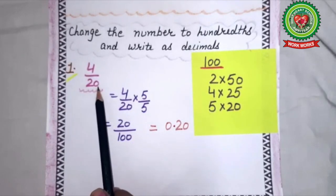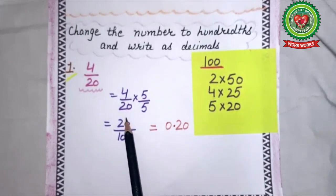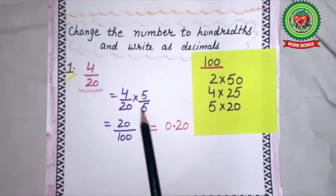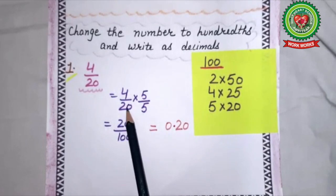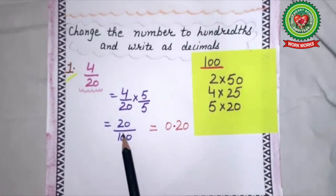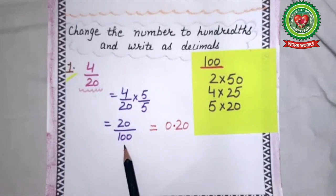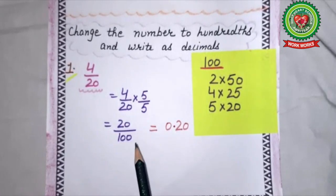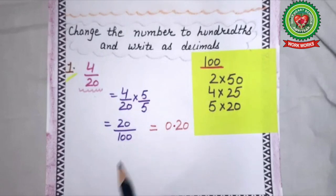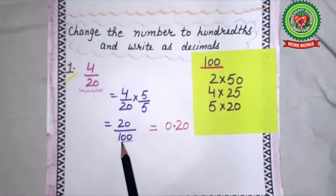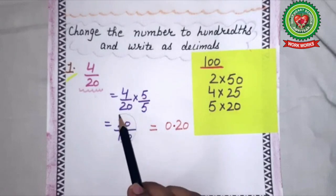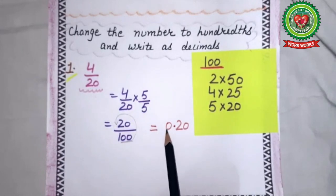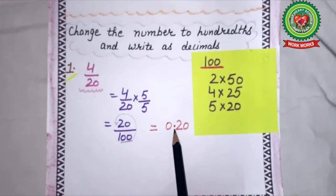First sum is 4 upon 20. The denominator is 20, so we multiply by 5: 4/20 × 5/5. 4 × 5 = 20, 20 × 5 = 100. Now it is 20 upon 100. Number of zeros is 2, so we shift the decimal by 2 digits. No digit before decimal, so we put 0. Answer is 0.20.